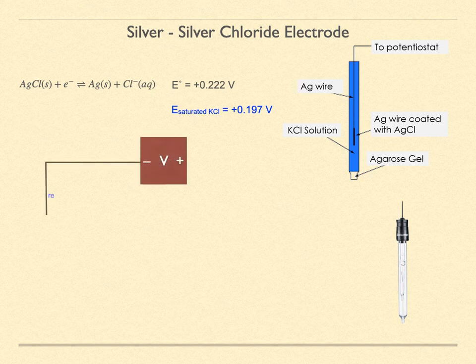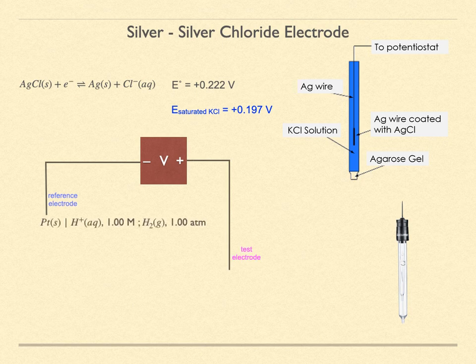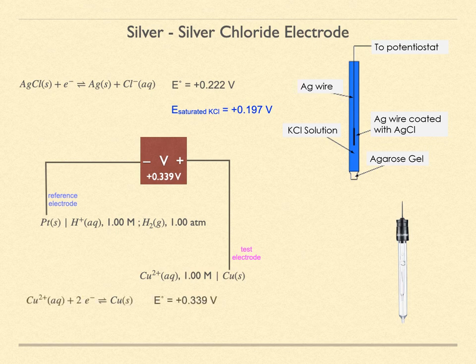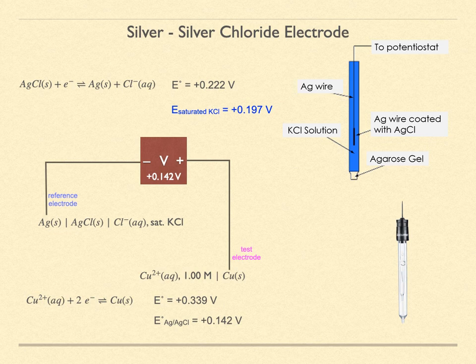Take the voltmeter and connect a reference electrode in the usual fashion. Starting again with the SHE, connect the standard Cu/Cu²⁺ half-cell in the test position — we again observe the measured potential to be plus 0.339 volts, and we assign that value to the reduction process for the Cu²⁺/Cu couple, which is what's in the tables. But if we use the silver-silver chloride saturated KCl electrode as the reference half-cell, we instead measure plus 0.142 volts. There's nothing wrong with reporting this number as the Cu²⁺/Cu standard reduction potential with respect to silver-silver chloride saturated KCl. If we need its value against the SHE, we add back in the silver-silver chloride potential versus SHE.